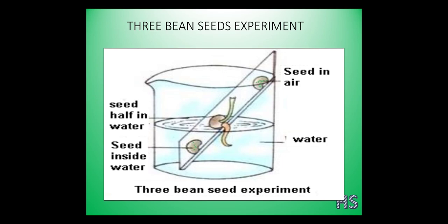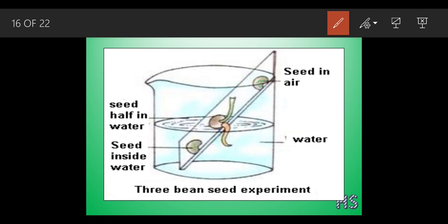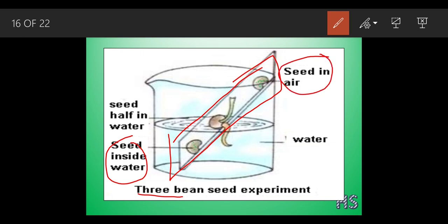Now the three bean seed experiment - this is quite important and interesting. There is a wooden plank with three bean seeds. One seed is completely inside the water, one seed is completely in the air, and one seed is half in water and half in air. We have studied that all three factors - proper amount of water, air, and temperature - are highly dependent on each other.